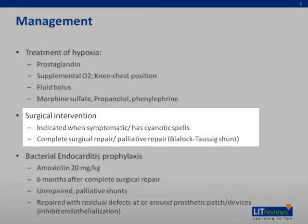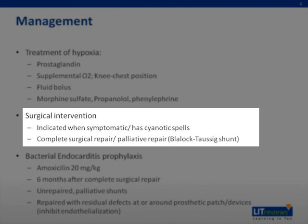Early surgical intervention has been shown to minimize secondary damage to the heart and other organs. However, the optimal timing for this is still debatable. Intervention can either be complete surgical repair, or the placement of a Blalock-Taussig shunt, which is usually used for palliative measures.